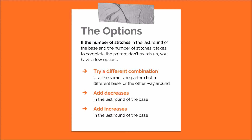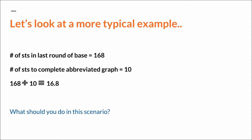A big point I want to make before moving on: I've been saying that you need to add either increases or decreases, but when I say decreases I'm actually meaning something else. For the sake of simplicity I'm going to continue saying decreases for now, and in a later slide I'll explain what I actually mean by that term. Let me give you an example of a more typical scenario. Let's say in your base the number of stitches in the last round is 168, and you choose a pattern that has an abbreviated graph that takes 10 stitches to complete.